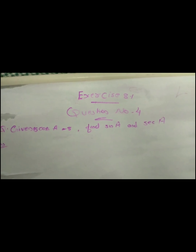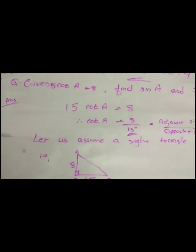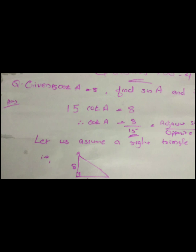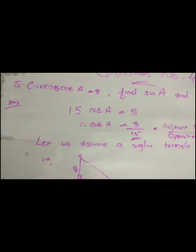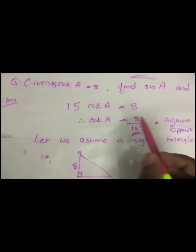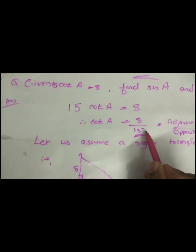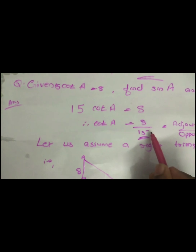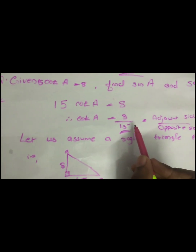We need to find sine and cosec. We will expand cot A. The cot A is equal to 8 divided by 15. The formula for cot is adjacent side by opposite side.